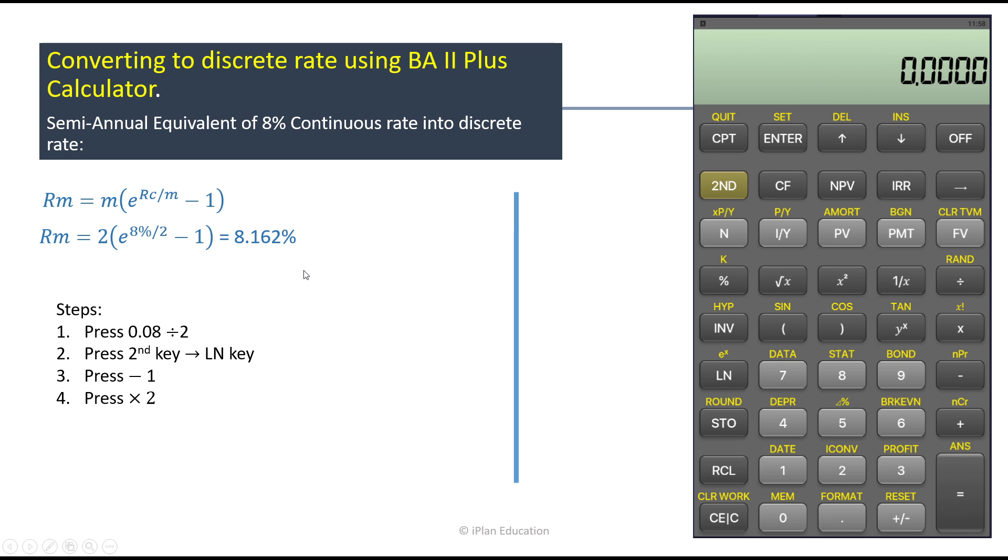Now how do we use it using a financial calculator? So you have to follow these steps. So let's do it on financial calculator. Let's clear the sheet, now enter the value, so 0.08, now divide it with 2.